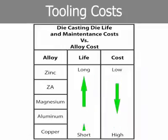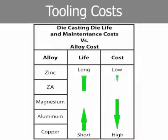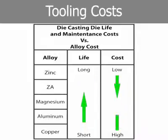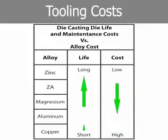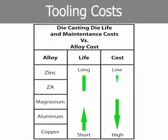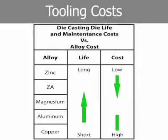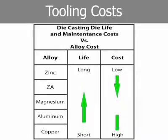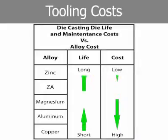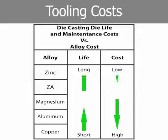Zinc and zinc aluminum alloys are cast at lower temperatures than aluminum and magnesium and do not attack the die steel at casting temperatures. Therefore, die life is greatest and maintenance costs lowest for zinc alloys.